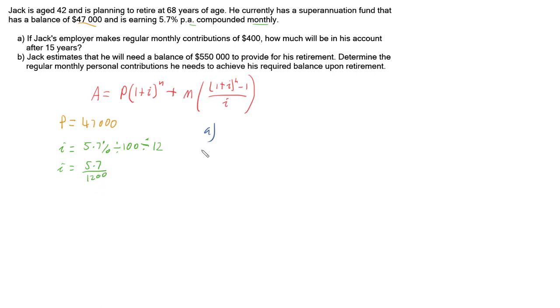So let's have a look at part A. Part A says that we've got regular contributions of $400, which is M, and it also says we're going to want to do this in 15 years time, and that is n equals 15 times 12 months in a year, so we've got 15 times 12, which means that we have 180 months worth for our investment.